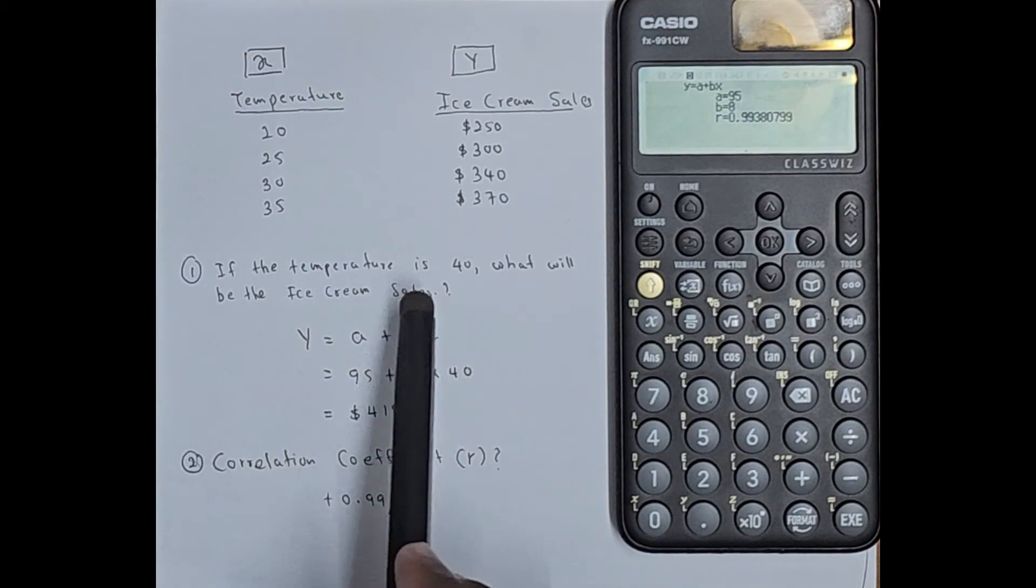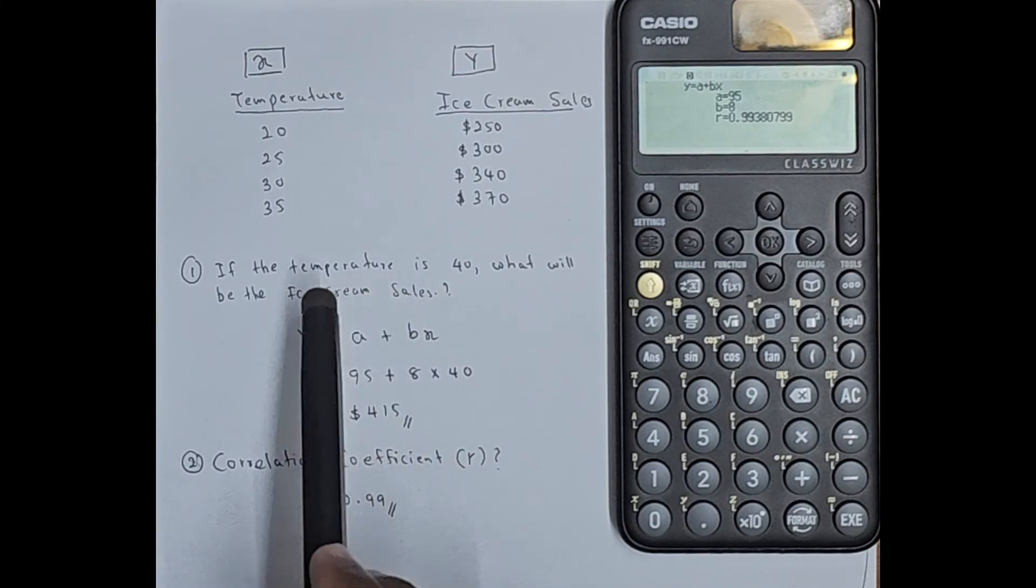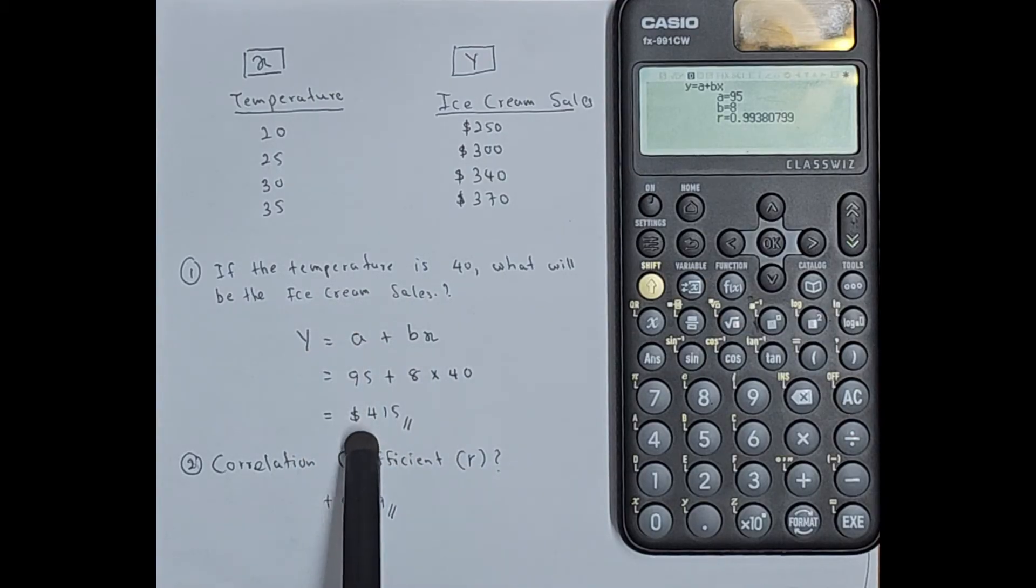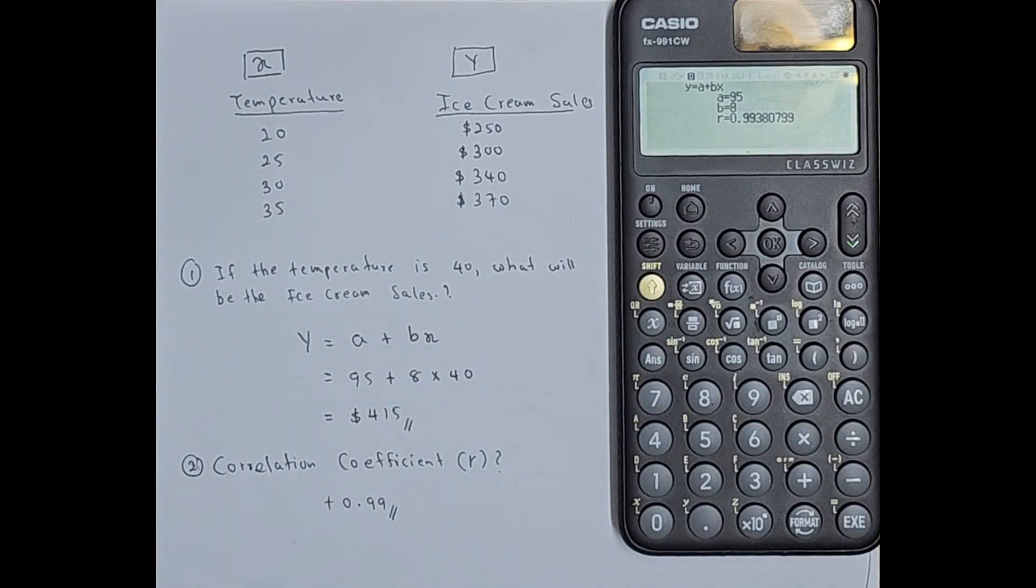So here we want to forecast the ice cream sales if the temperature is 40. So if X is 40, what will be your ice cream sales? A is 95, B is 8. So if the temperature is 40, ice cream sales will be 450.